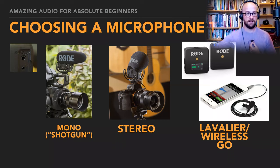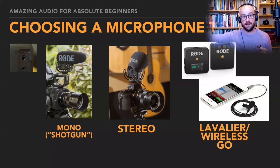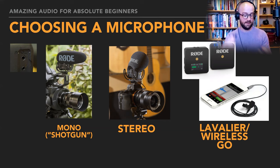Rode have an app called Reporter, which is free — it's like a big red button that records in very high quality, broadcast WAV quality or MP3 for long recordings. In this way you can use your phone as a remote recording system. Put the mic on the person, send them off to the other side of the room — because the microphone is close, you will always have close-up sound.